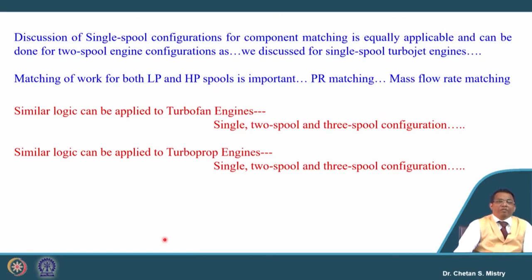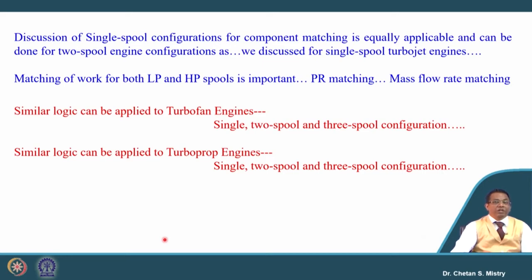Overall, we have discussed the single spool configuration for component matching, and the logic of single spool configuration is equally applicable for the two spool configuration. Based on these fundamentals, we can move forward with the mass flow balance between the HP spool and LP spool, then do component matching in terms of power, and then nozzle matching. Due to time limitations, we will not be discussing this configuration for two spool engines in detail.